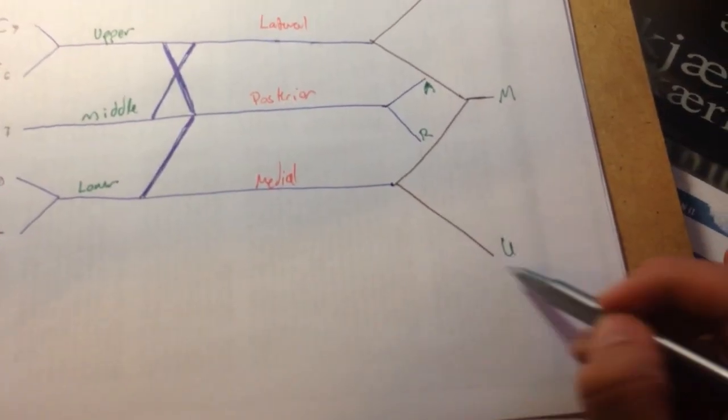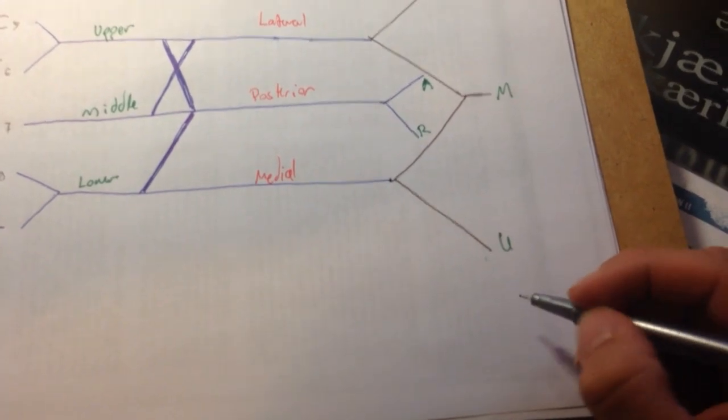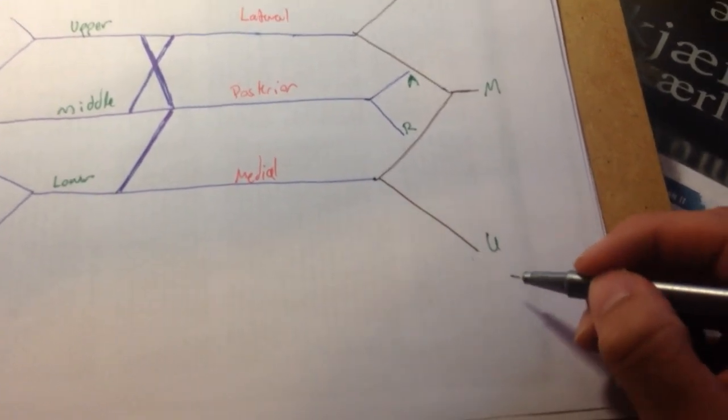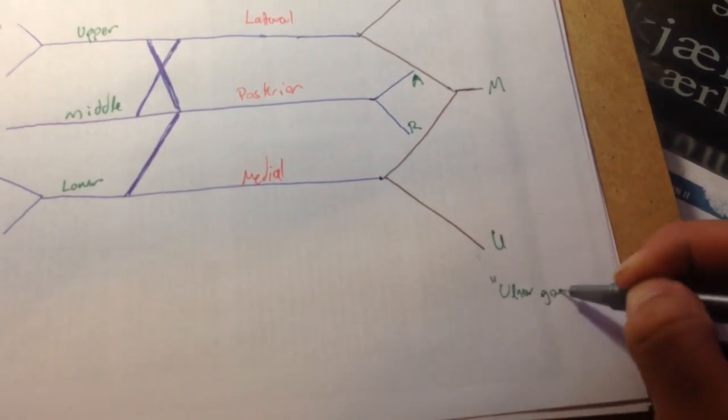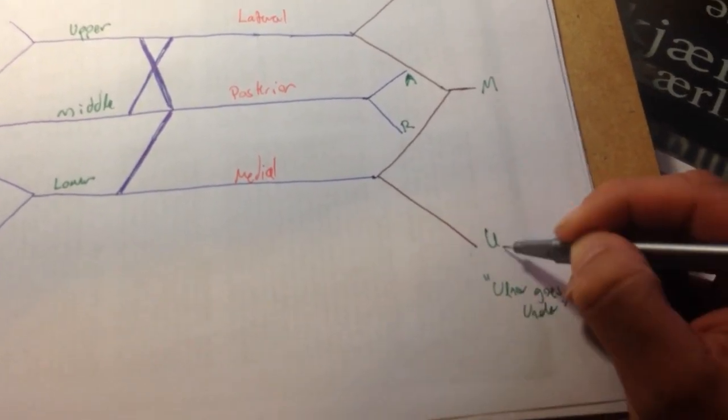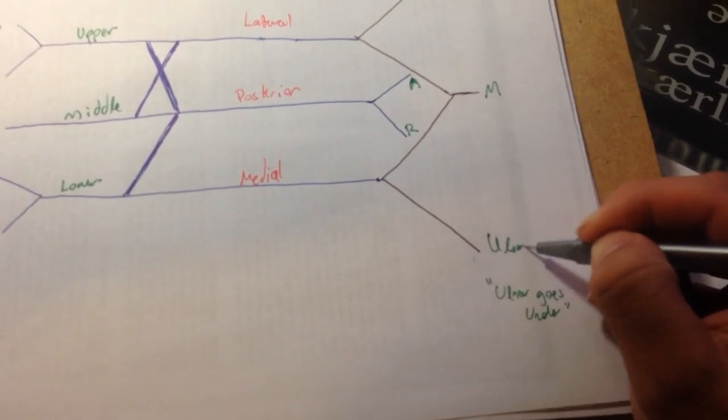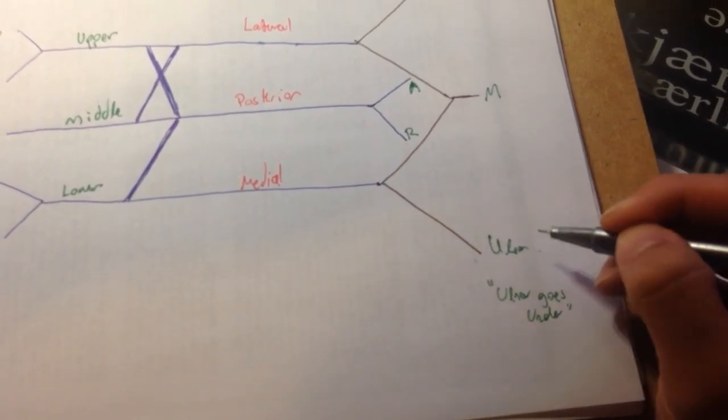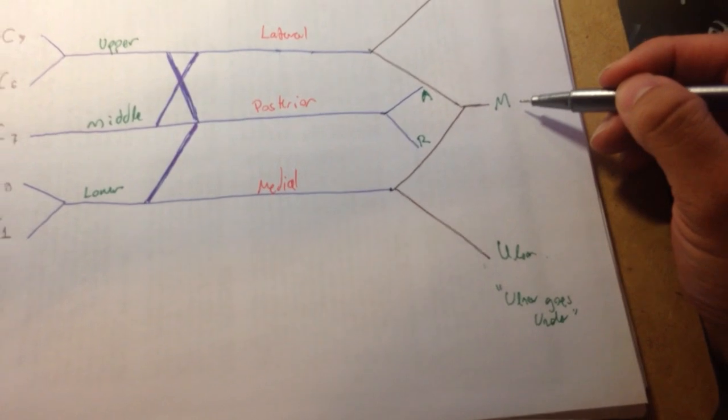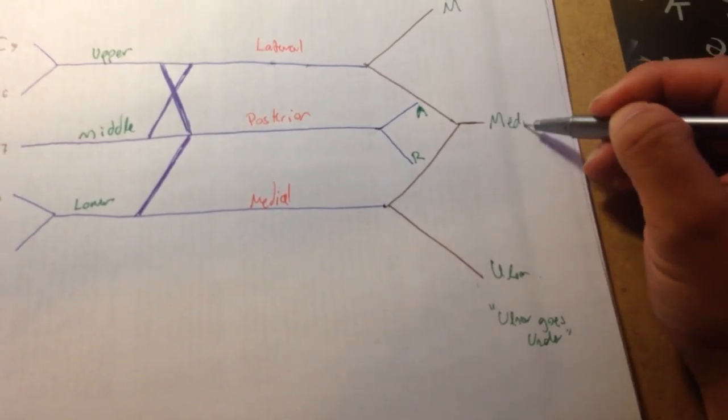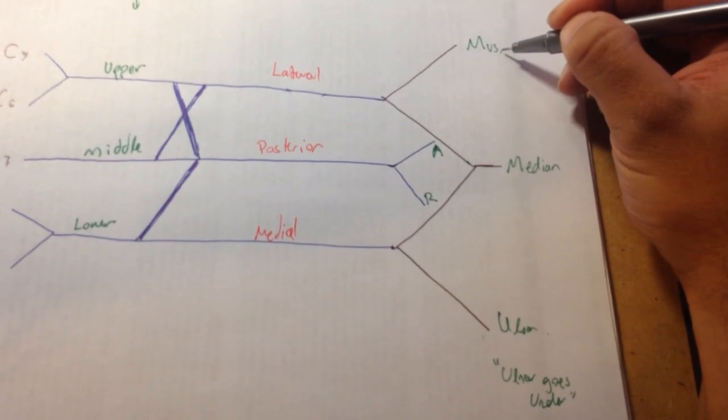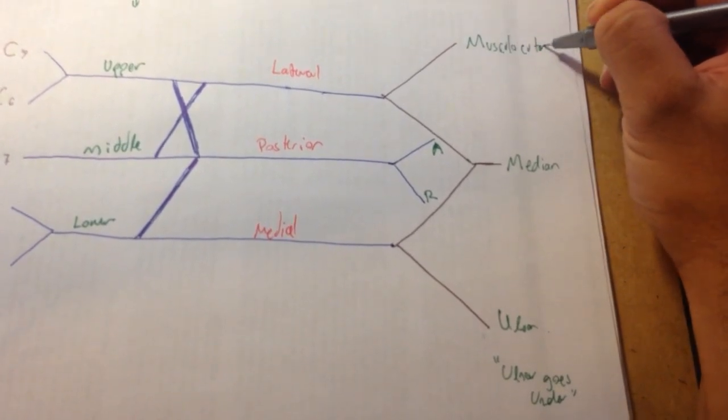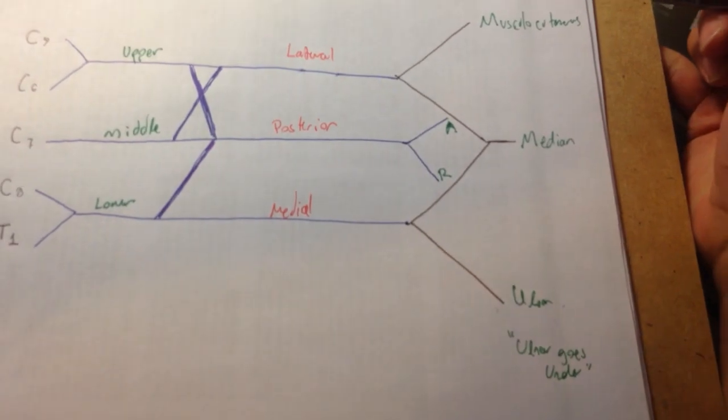And you remember that U is down here because I use a mnemonic that goes, ulnar goes under. Ulnar goes under. So, this is the ulnar nerve. The one in the middle is going to be the median nerve. And the other one is going to be the musculocutaneous. Musculocutaneous.